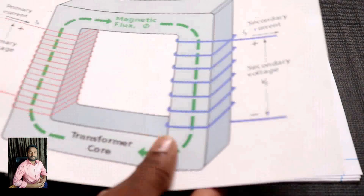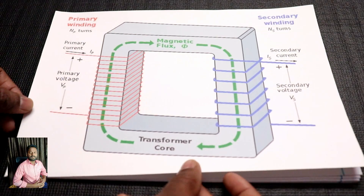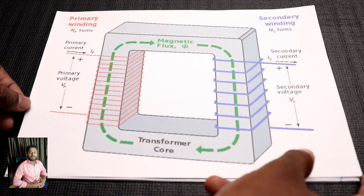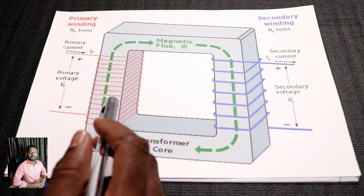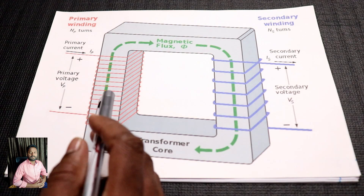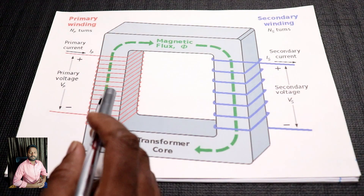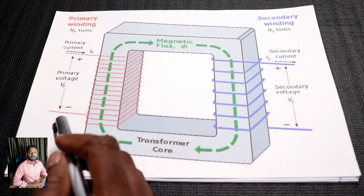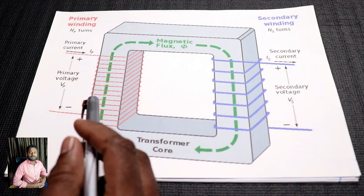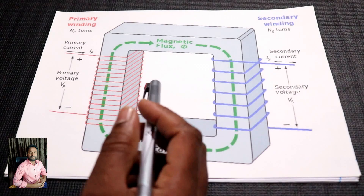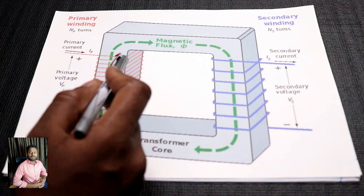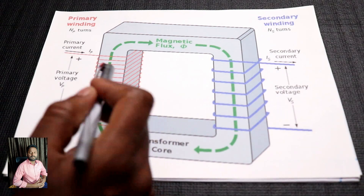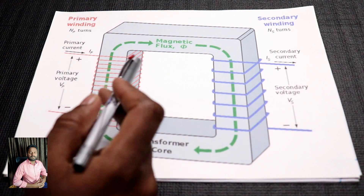There is a transformer. You can select a transformer. I will explain how to connect the alternating current in this video. You have primary winding and secondary winding, and you have an iron core winding in the transformer.